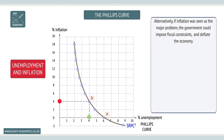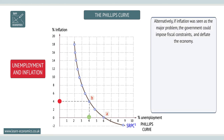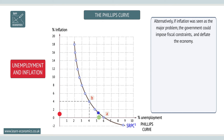However, if attention switched to inflation, the government would reverse its policy and impose a fiscal constraint. The economy would then move back to point A. The process of periodically stimulating and constraining an economy was called a stop-go policy. This dominated policy in the UK from the 1950s to the 1980s.